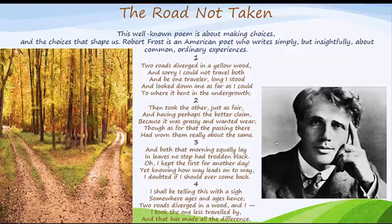Now let's read the third stanza: 'And both that morning equally lay in leaves no step had trod in black. Oh, I kept the first for another day, yet knowing how way leads on to way, I doubted if I should ever come back.' The speaker wants to say that both roads were covered with leaves which had not yet been turned black by footsteps. The speaker exclaims that he is in fact just saving the first road and will try to travel it on a later day. Then immediately he contradicts himself with the acknowledgement that in life one road tends to lead onwards to another, so it is therefore unlikely that he will ever actually get a chance to return to that first road.